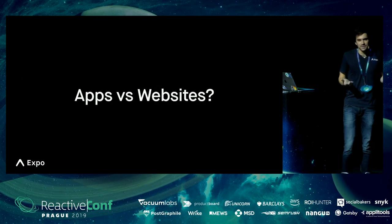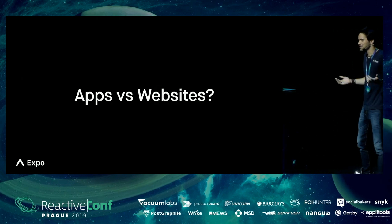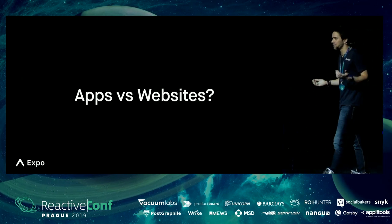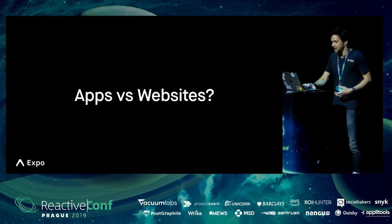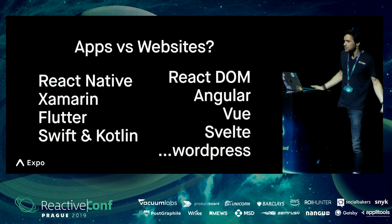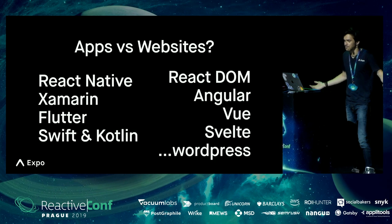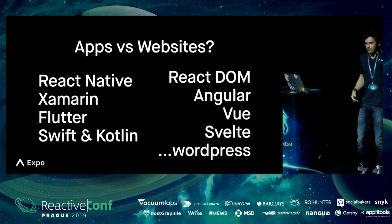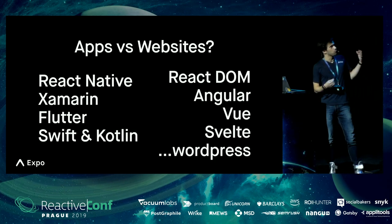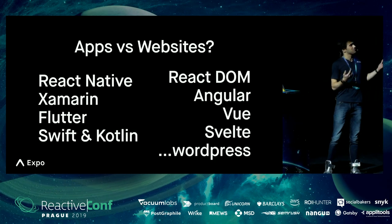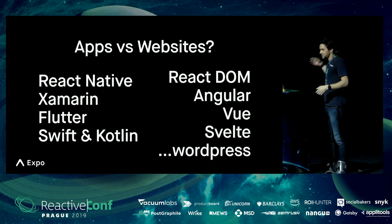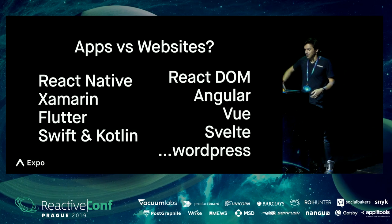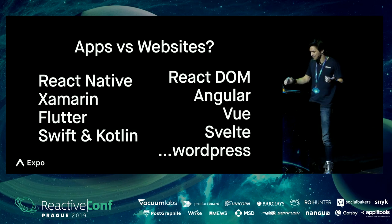This presentation, just like any great project, starts with the question of do you build an app or a website? The reason you need to choose is because the stack is totally different. For apps, you can use a cross-platform tool like React Native, Xamarin, or Flutter. To build a website, there are a bunch of options like React, Angular, Vue, WordPress, of course.